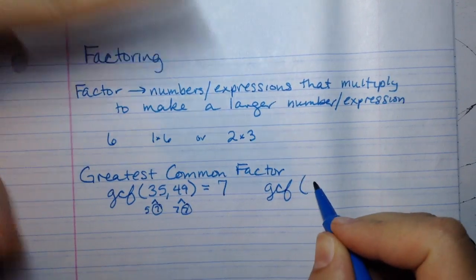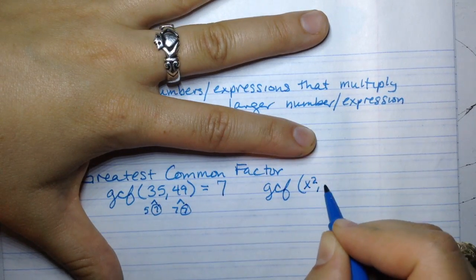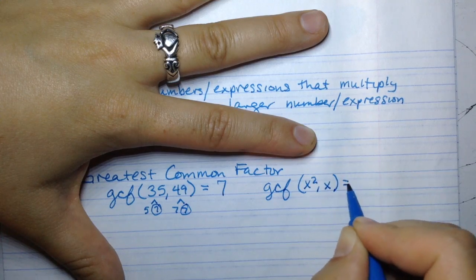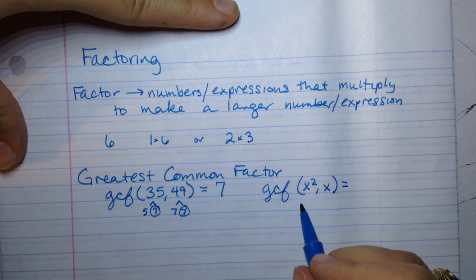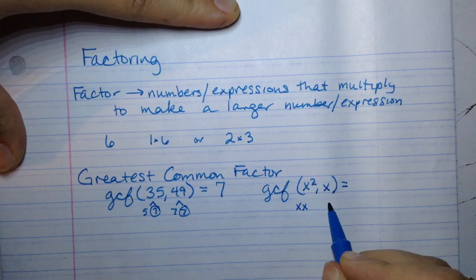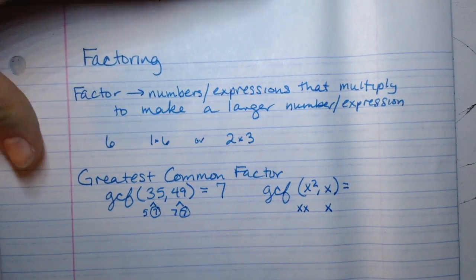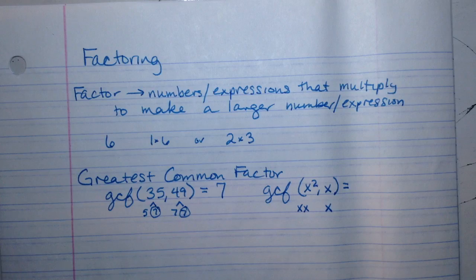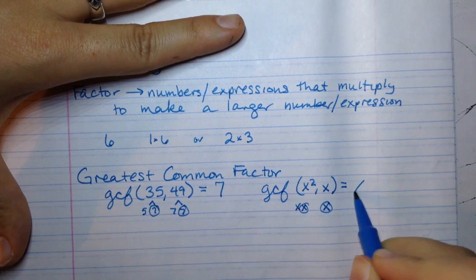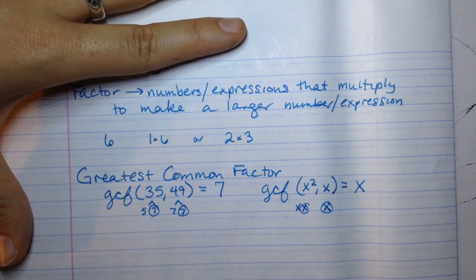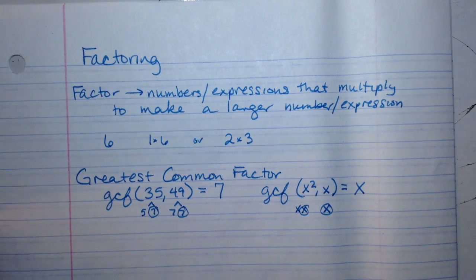So what would be the GCF of x squared and x? Well if we broke these down, x squared is x times x and x is just 1x. If we're looking for common terms, what do they both have in common? They both have an x. Since they both have an x, the greatest common factor that they share is this x. That is basic, basic factoring. Basic like elementary school style factoring.